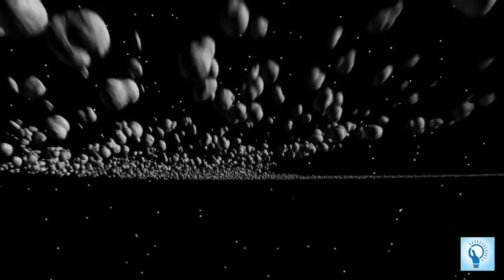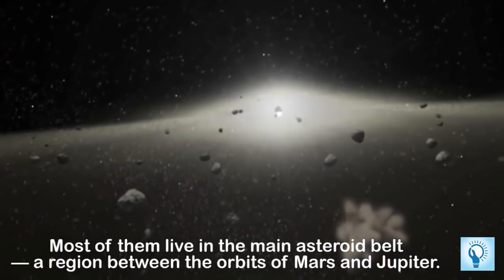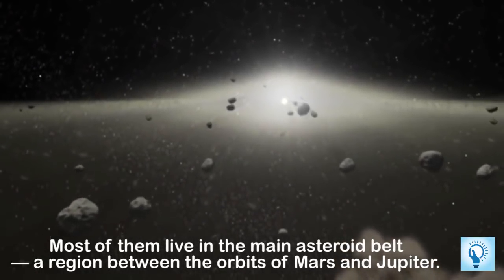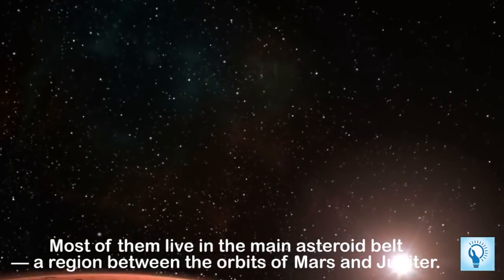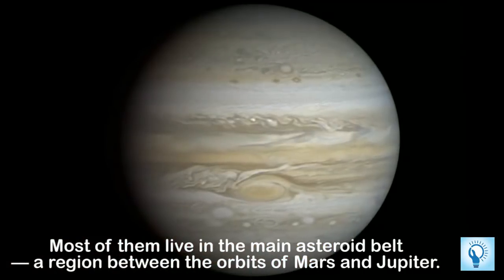Of course there are lots of asteroids in our solar system. Most of them live in the main asteroid belt, a region between the orbits of the red planet Mars and the heavy planet Jupiter.